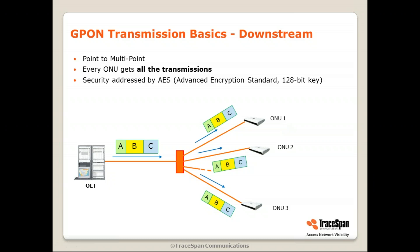Proper ONUs will not look at data which is not intended for them, but there is a potential security risk here, because the fiber comes to a customer's home. If a customer has some device that can look at all the data, then he or she has access to all the downstream transmissions of all the customers — and this is a potential security risk. To address this, there's a mechanism called AES Encryption.